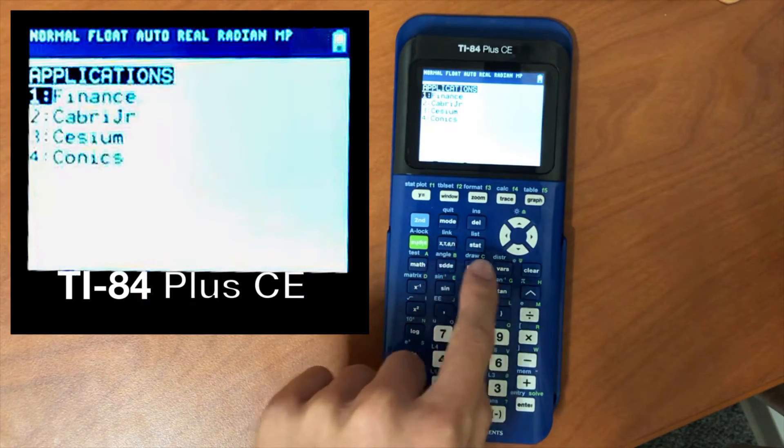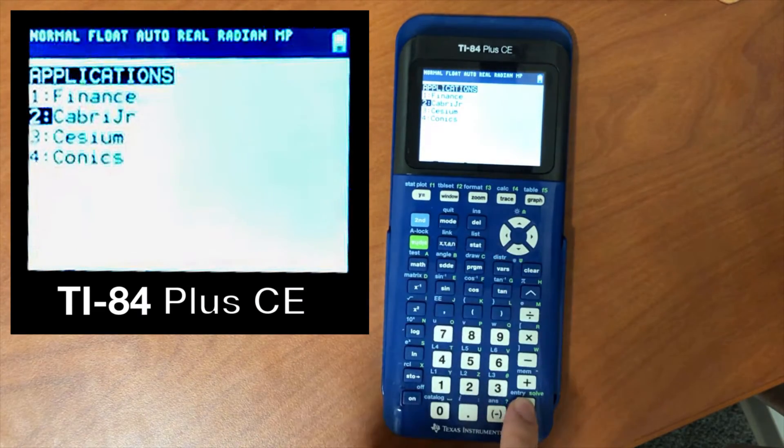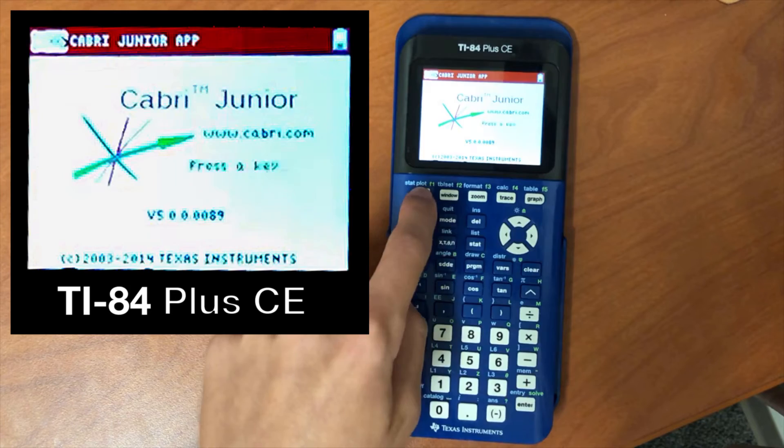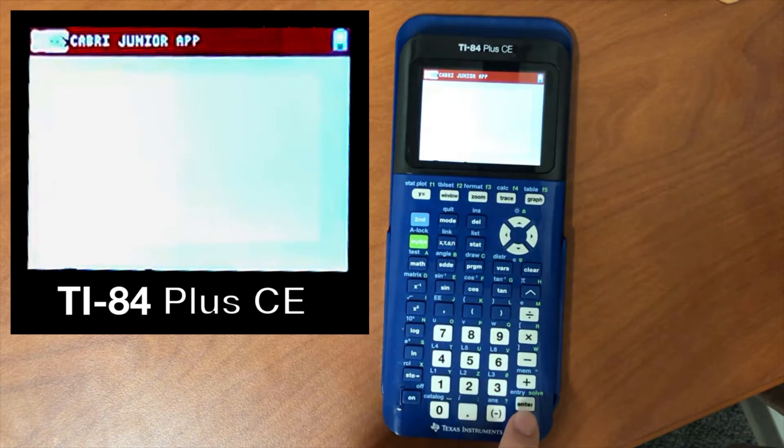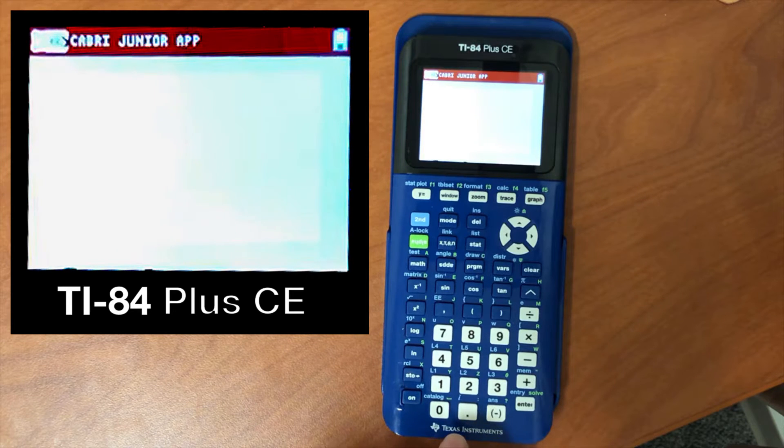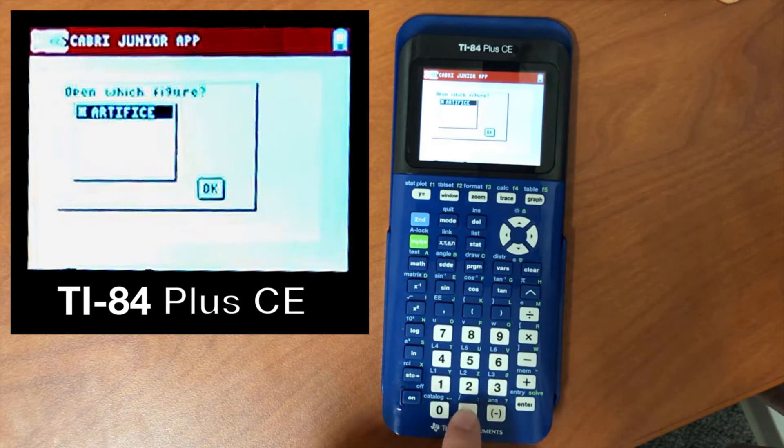Now that you have the jailbreak installed on the calculator, it's time to run it. Press apps and run Cabri Jr. Press Y equals until you see this drop down menu, then select open. Give it a moment to think. Then select Artifice.